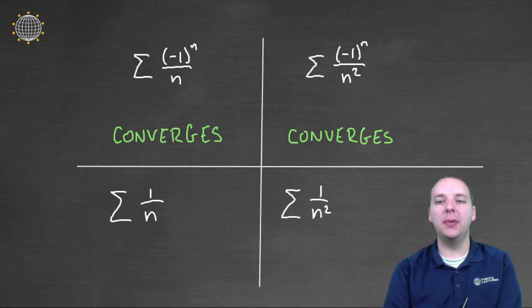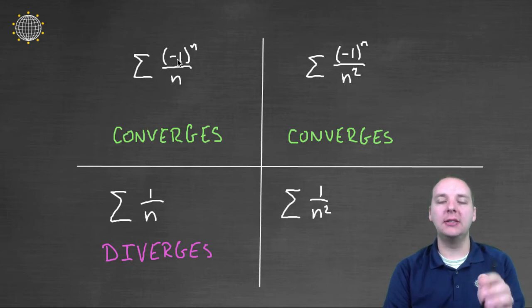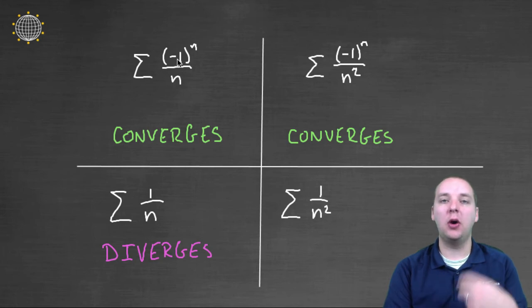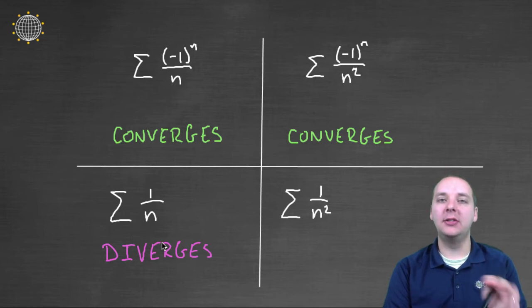Now here's where it gets a little tricky though. If we look at this guy, if you did not have the terms going plus, minus, plus, minus - if you just had one plus a half plus a third plus a fourth plus a fifth, always plus, always adding, always more - this guy would actually diverge if you were not allowed to subtract every other term, if you were always adding.